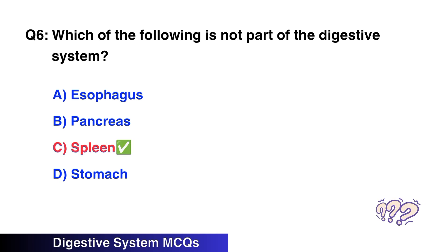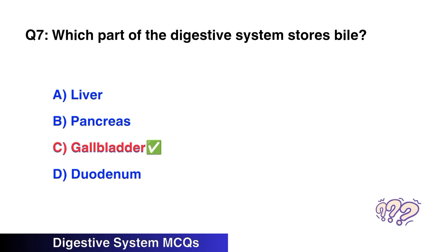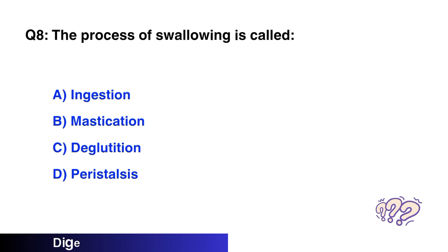Question number six: Which of the following is not a part of the digestive system? The right option is C, spleen. Question number seven: Which part of the digestive system stores bile? The right option is C, gallbladder.